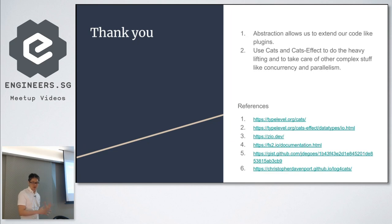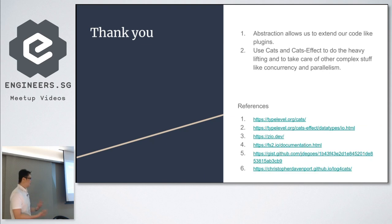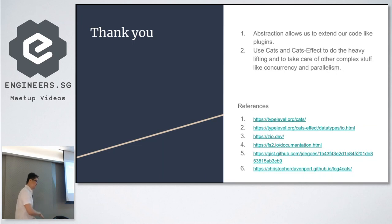Abstraction allows us to extend our code like a plug-in — you can easily plug in where you want to change the output. Let Cats and Cats Effect do the heavy lifting, taking care of complex stuff like concurrency and parallelism. The IO Monad is very deep with a lot of functions, and there's another library for the parallel part, also based on IO and Cats. Thank you very much.